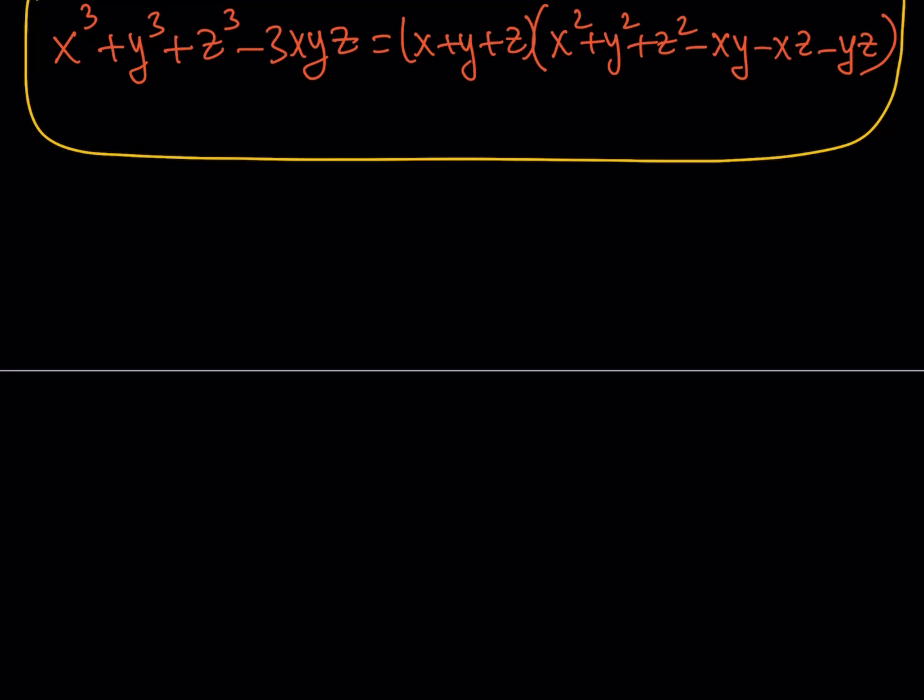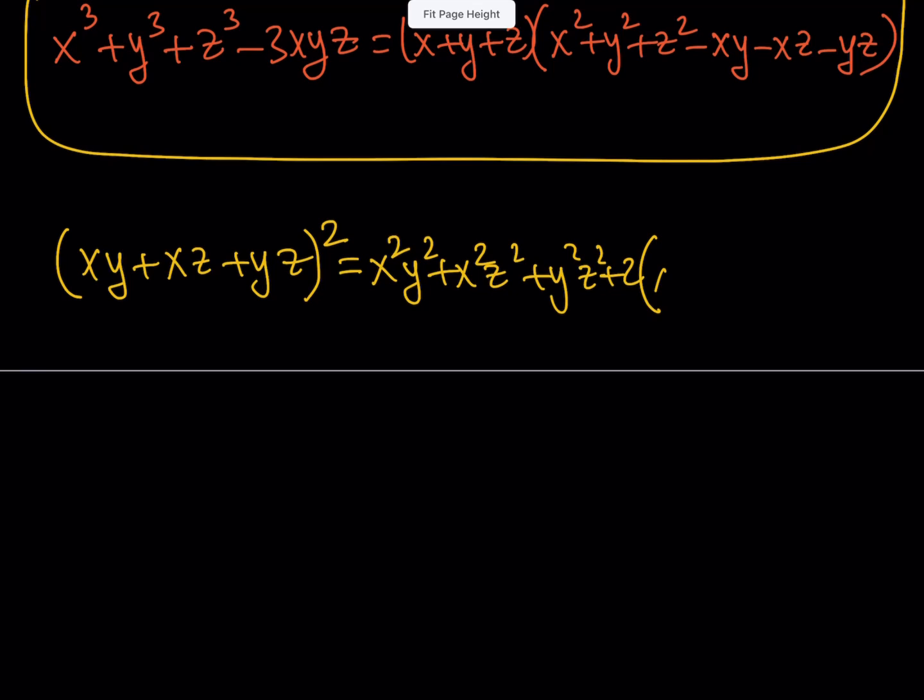So what I'd like to do is I'm going to square xy plus xz plus yz. Why? Because I want to get the sum of their squares. So when you square it, same formula: x squared y squared plus x squared z squared plus y squared z squared plus 2 times the quantity. Now you're going to multiply the first and the second term you're going to get x squared yz, you're going to multiply the first and the third you're going to get y squared xz, and the second and the third you're going to get z squared xy.